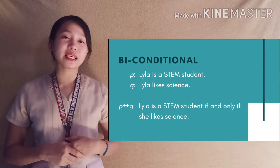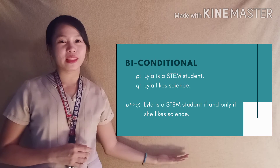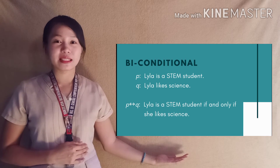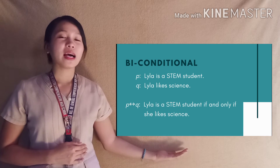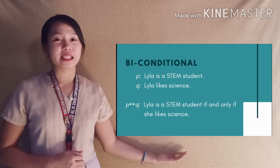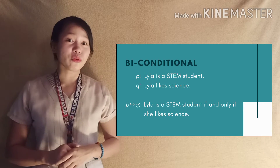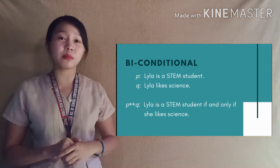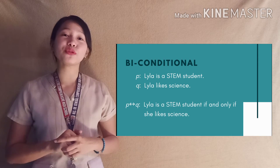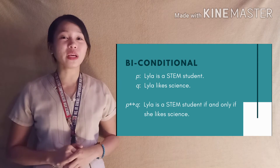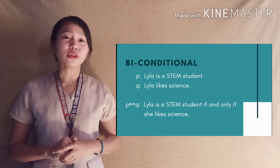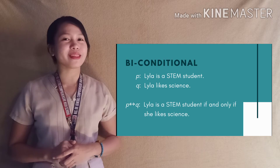Let's have an example for biconditional. Our P is: Lila is a STEM student, and our Q is: Lila likes science. Therefore, our resulting biconditional statement is: Lila is a STEM student if and only if she likes science. What other examples can you think of?